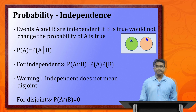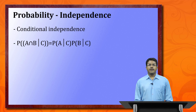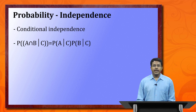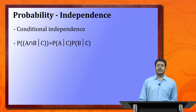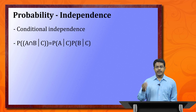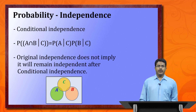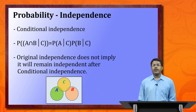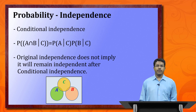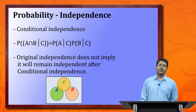Now we come to conditional independence. Suppose A and B are two events that are initially independent. If we introduce a new event C that intersects with both A and B, the question is whether A and B remain independent. The key point is: two events that are originally independent do not necessarily remain independent once a condition is imposed — imposing a condition can change independence into dependence.